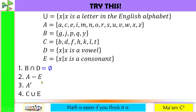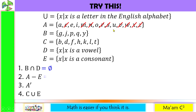Number 2: A minus E. The elements found in set A but not in set E. Set A contains the short letters, and set E contains the consonant letters. We cancel all consonants from set A: C, M, N, R, S, V, W, X, and Z. The elements remaining in set A that are not in set E are A, E, I, O, and U.